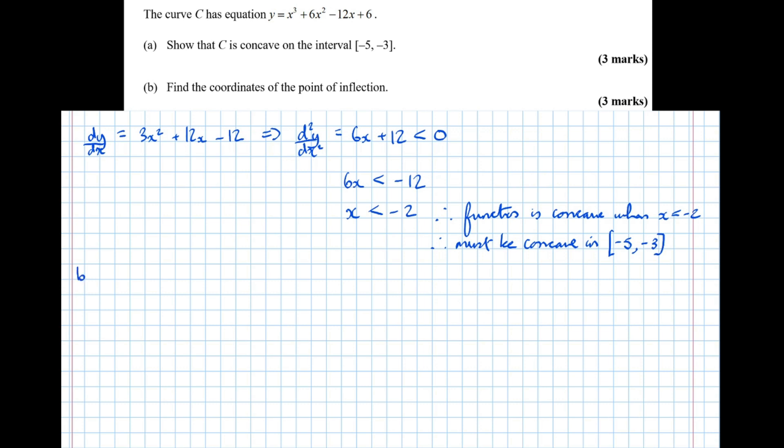So part B, find the coordinates of the point of inflection. Well we're given, just label that one up there part A as well. We're given that there is a point of inflection. So the point of inflection occurs when the second differential is equal to 0.